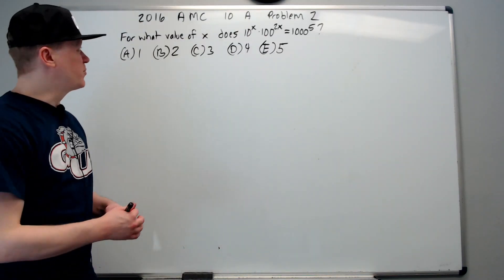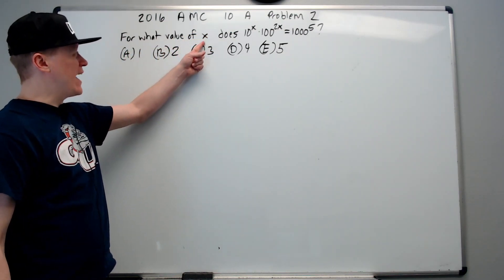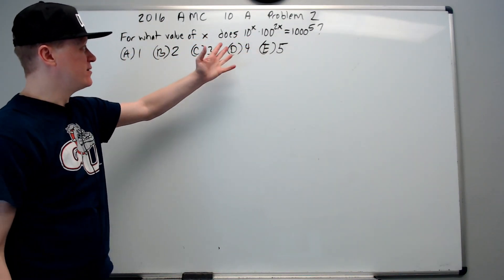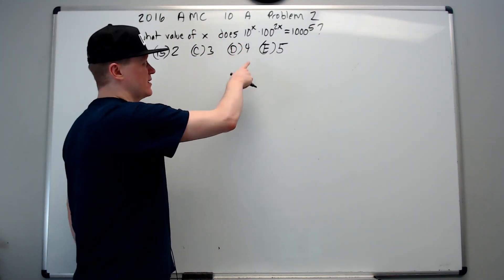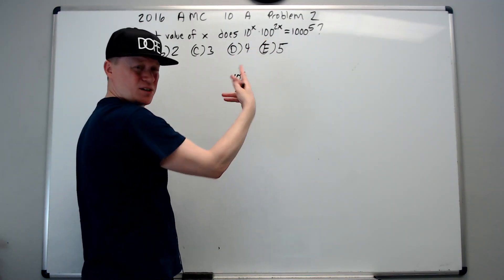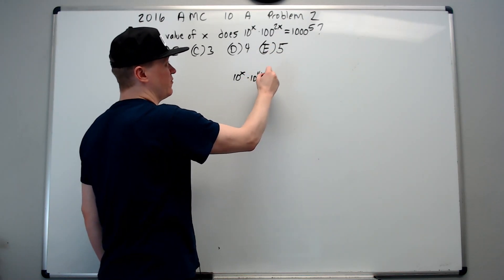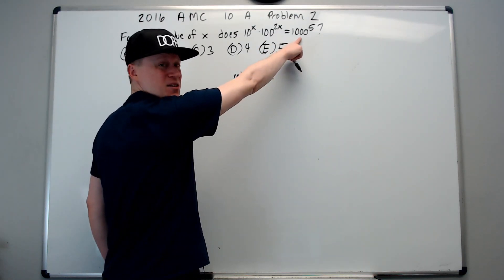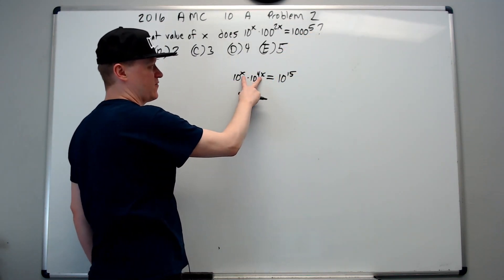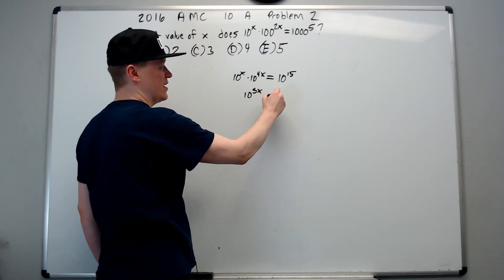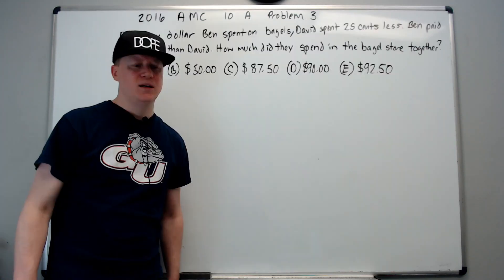Continuing on to problem 2 of the 2016 10A. For what value of x does this expression equal? Look for shortcuts. 10 to the x, leave alone. You should look at 100 and see that's 10 squared, and 10 squared to the 2x is 10 to the 4x. This is 10 to the 3rd to the 5th, which becomes 10 to the 15th. That's 5x. 10 to the 5x equals 10 to the 15th, so x equals 3.